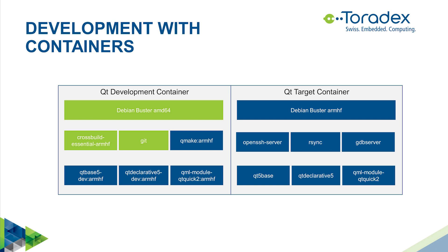Qmake is a little bit special — you have to run the ARM-HF Qmake even on the AMD64 machine, because otherwise it would generate makefiles for AMD64. However, in newer distributions, if you want to execute an ARM binary, the kernel will automatically detect it and launch it with QEMU support, emulating that binary. That's possible thanks to binfmt. On the target, you just install your Qt package, Qt libraries, open SSH server, RSync, and GDB server, all running natively on ARM-HF.